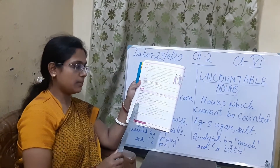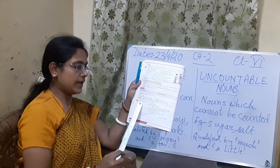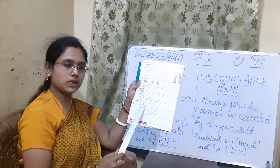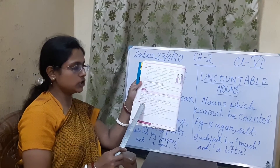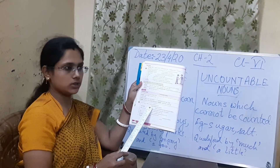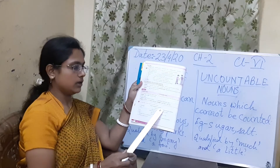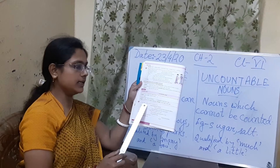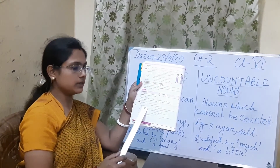Here is exercise number eight which you have to solve. Use 'a few', 'many', 'a little', or 'much' in suitable places — meaning you have to identify whether the noun is countable or uncountable. For example, number one: 'dash people attended the function.' The answer could be 'a few people' or 'many people'. You have to fill in the blanks correctly in your book.